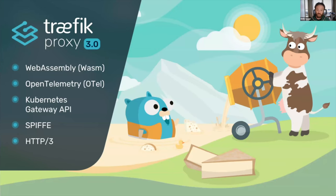It's time to get to the main topic: Traefik v3. We'll focus on key features of this release — of course the release notes are much bigger, but the key features we want to highlight are WebAssembly, OpenTelemetry, Gateway API for Kubernetes, SPIFFE, HTTP/3, and Tailscale. Let's start with OpenTelemetry.